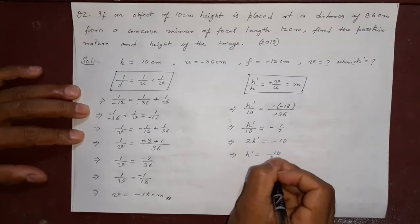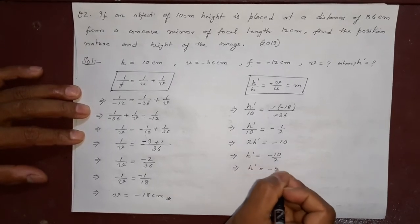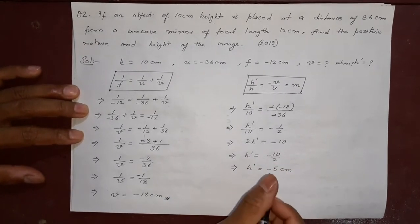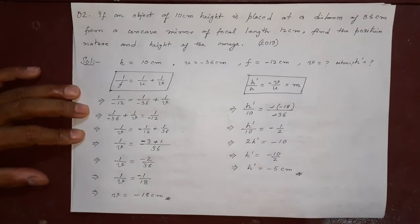This will give you h dash equal to minus 5 centimeter. Now you see the image is inverted, that is why minus height is minus coming here. So you got all the information here.